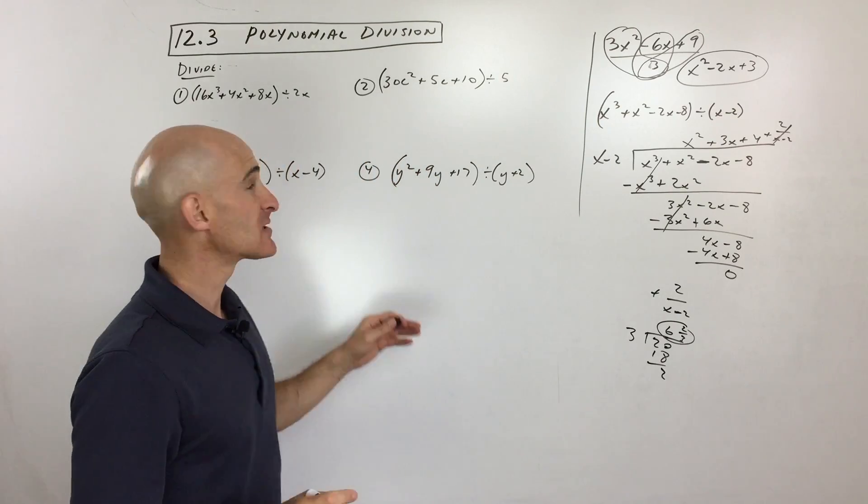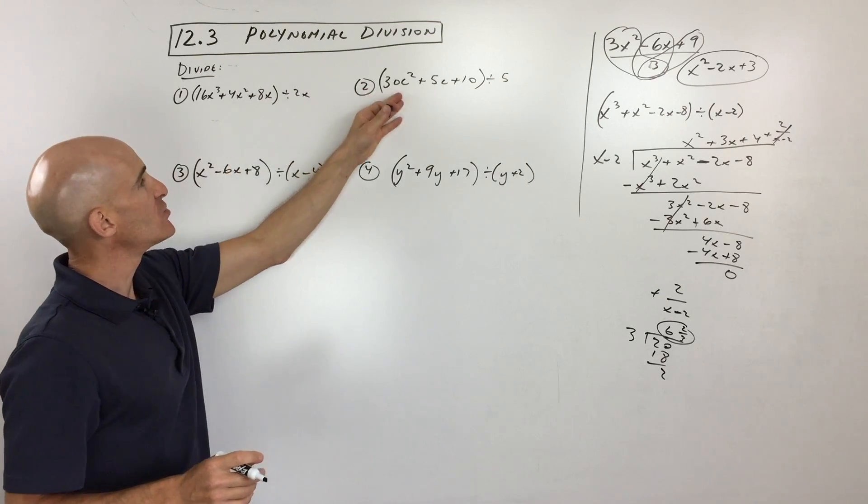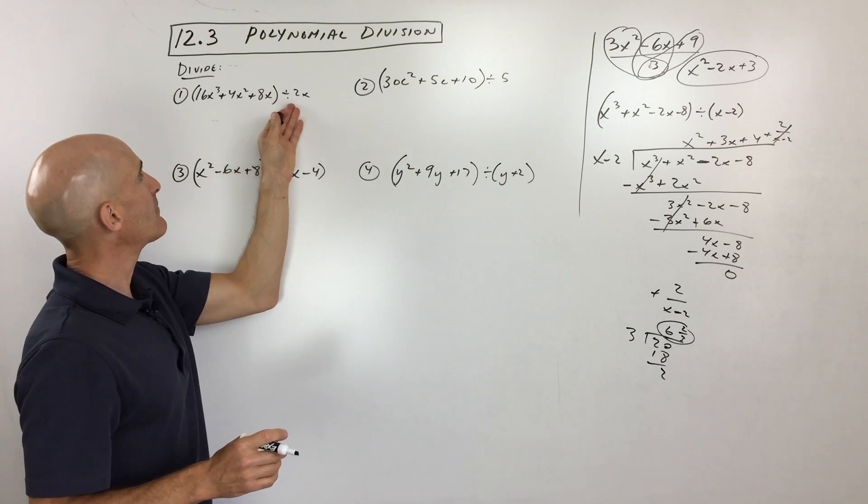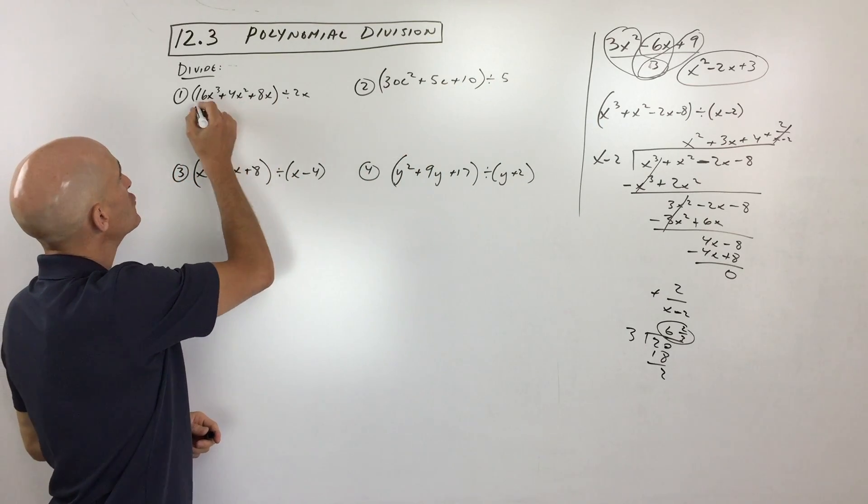So let's jump into some examples. See if you can pause the video and do these on your own. So let's look at number 1 and 2 first. Here you can see you're dividing by a monomial. See, just by one group, one term. So here what we're doing, dividing by 2x.